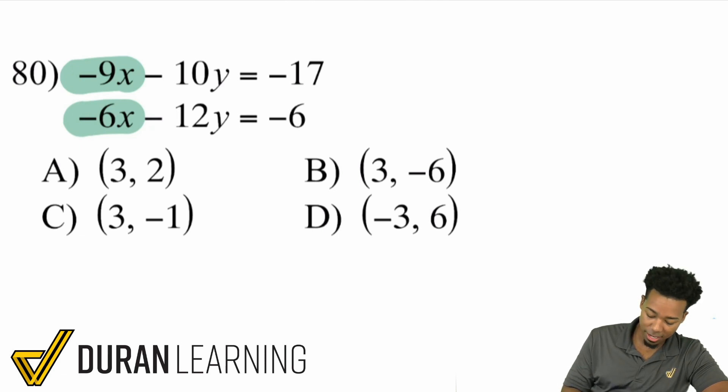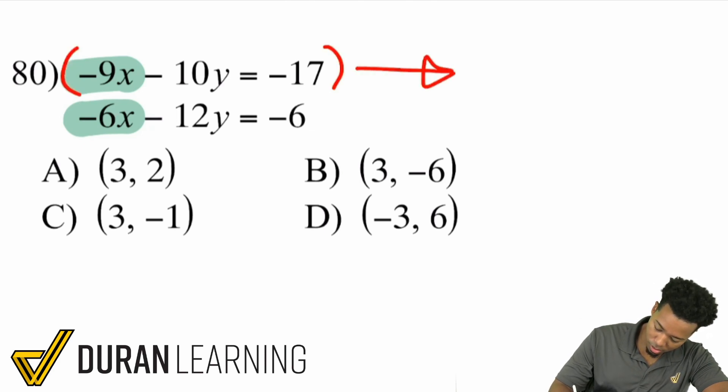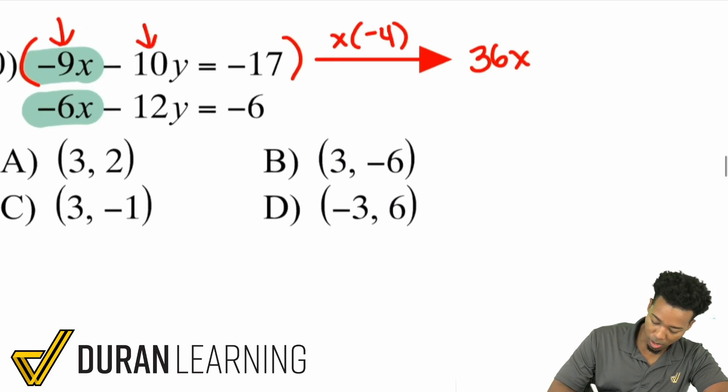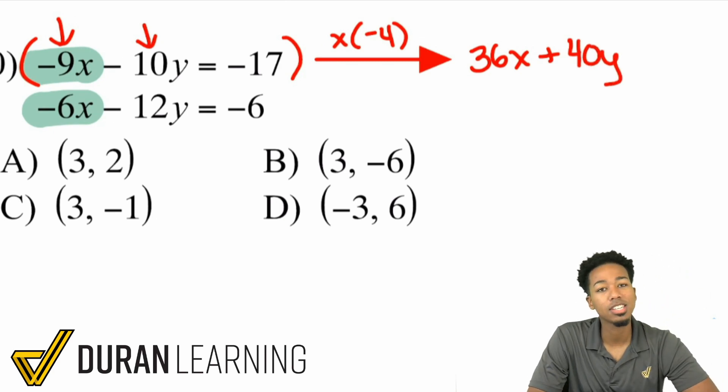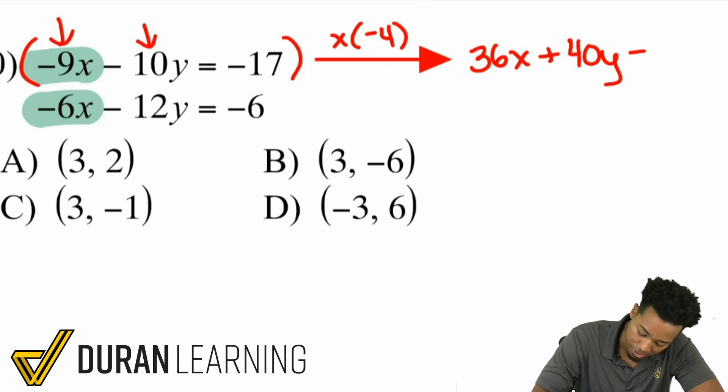But remember, over here we have a negative and a negative. So, I'm going to have to make one of these positive. I'll go ahead and make this top one positive by multiplying the negative 9 by a negative 4. You really have to think about this. But once you get into the groove, you're good. So, with that, I'm going to take this whole first equation and I'm going to multiply it by negative 4. So, negative 9x times negative 4 is a positive 36x. Negative 10y times negative 4 is a positive 40y. And then you have the negative 17 times 4. Well, here's the thing. Negative 17 times 4 is the same thing as multiplying by 2 and then by 2 again. 17 times 2 is 34. Times 2 again is 68. And since it was a negative times a negative, it's a positive 68.